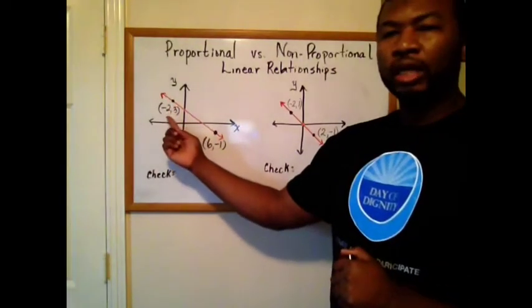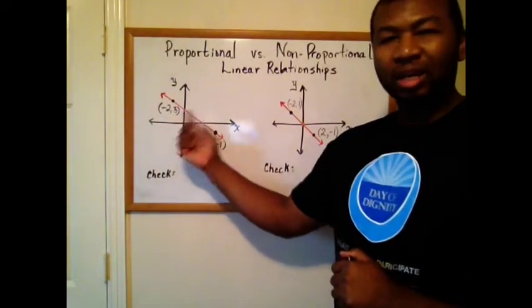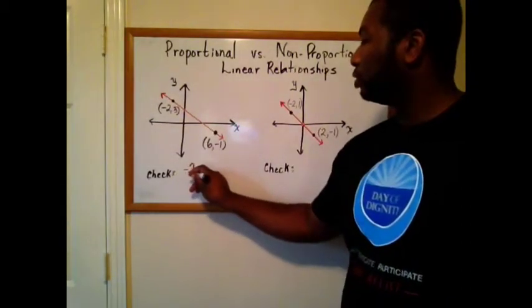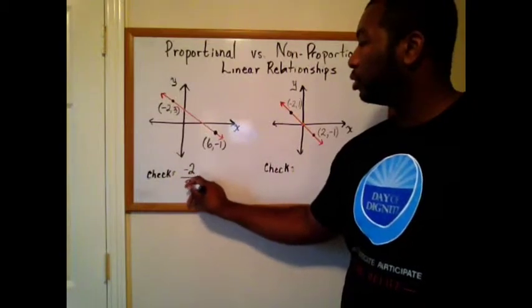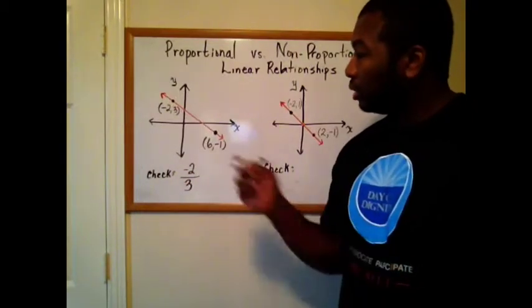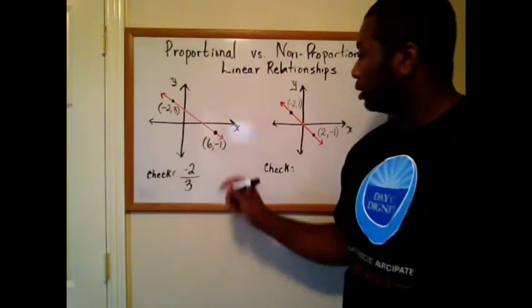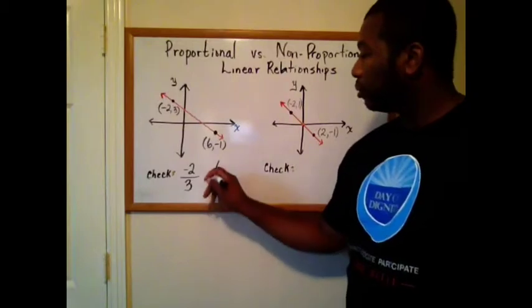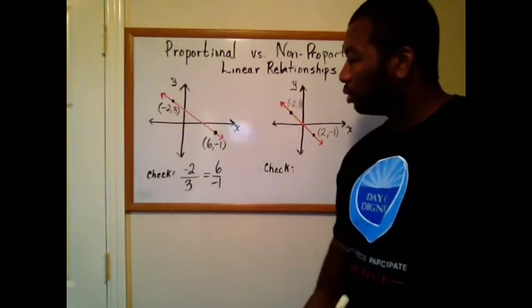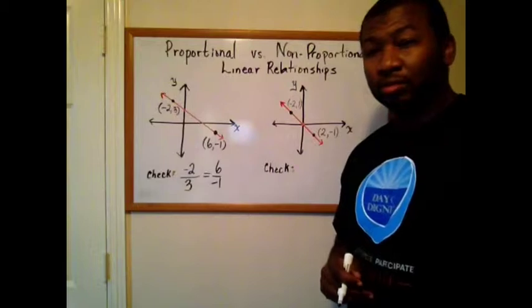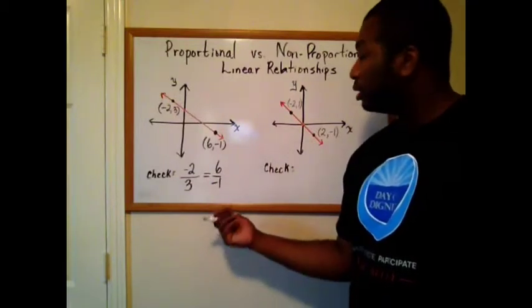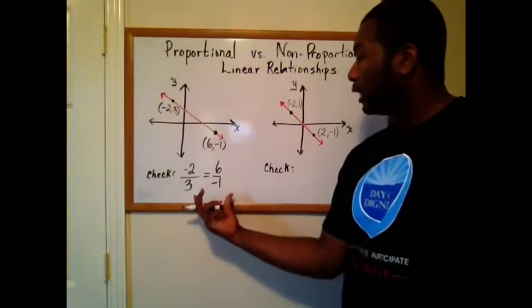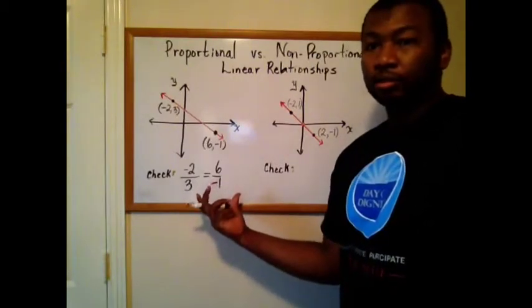I'm going to take this point over here, negative two, three, and I'm going to write it as a fraction. I'm going to write negative two over three. Then I'm going to take the second point and do the same thing. Six over negative one. And the question I'm going to check and see, are those two fractions equivalent? Even though they have negative numbers in them to check if they're equivalent, meaning proportional, I'm still going to do butterfly method, cross multiply.